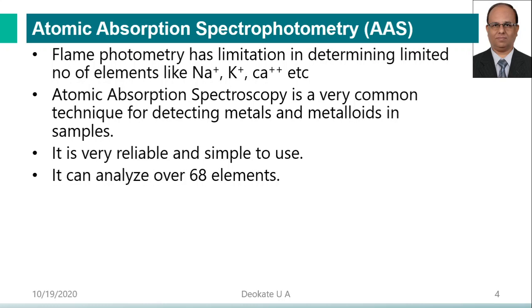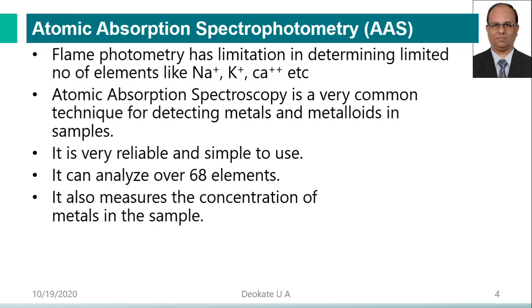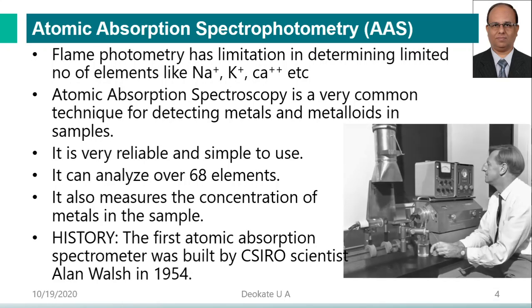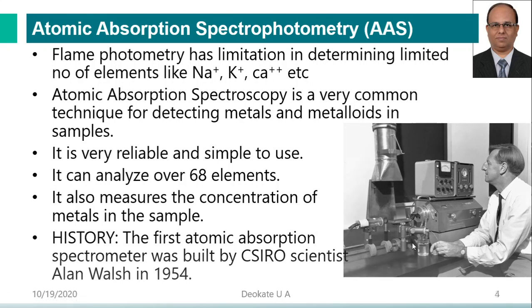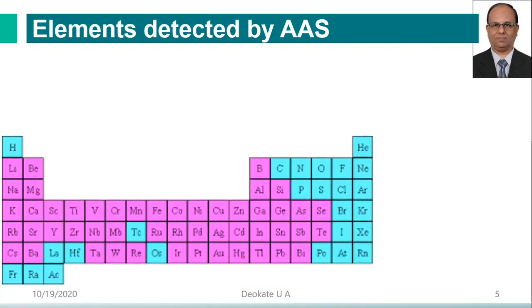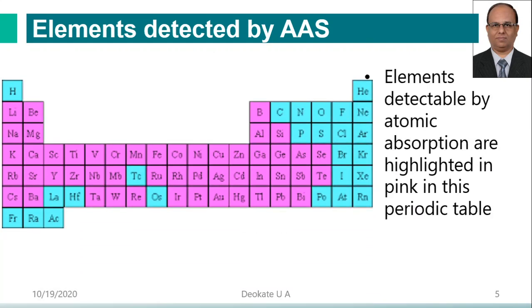It can analyze over 68 elements and measures the concentration of metals in samples. The first atomic absorption spectrophotometer was built by CSIRO scientist Alan Walsh in 1954. This is the first instrument developed for detection of various metals and metalloids. We can see the various elements detectable using the atomic absorption spectrophotometer — those shown in pink color.